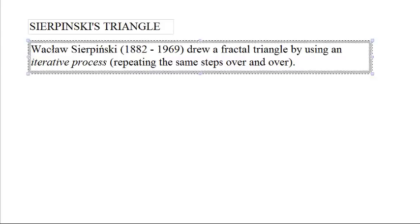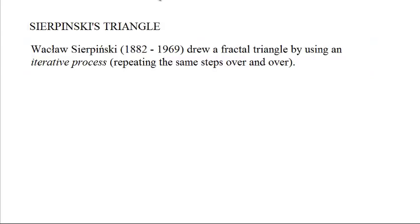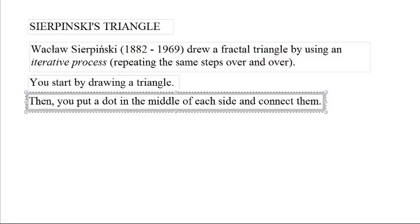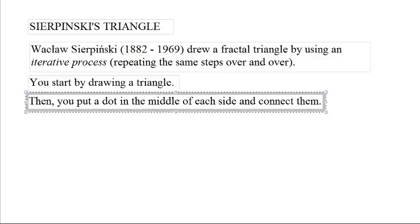That is, you repeat the same steps over and over. You iterate what you're doing. You start by drawing a triangle, then you put a dot in the middle of each side and connect them, and then you repeat this process for all of the triangles except for the one in the middle.